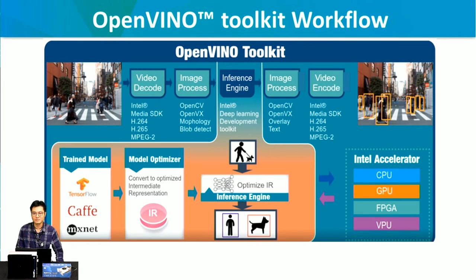After that, the inference result passes to the image post-processing stage. Again, we use OpenCV to do overlay or add text on the picture — for example, highlighting the inspection result and adding labels. The final step is video encoding using the Intel Media SDK, then passing the video stream to other servers. From the diagram, you can switch between different accelerator architectures: CPU, integrated GPU, FPGA, and VPU.